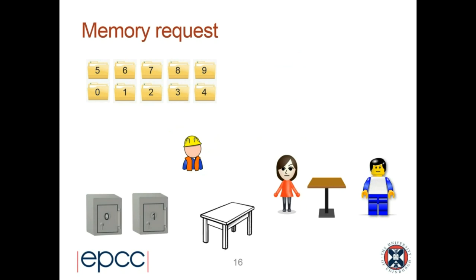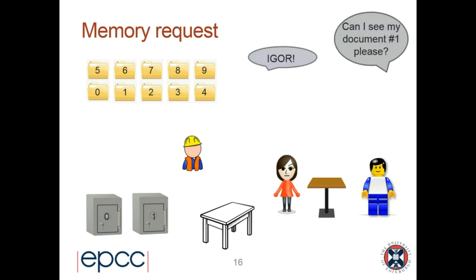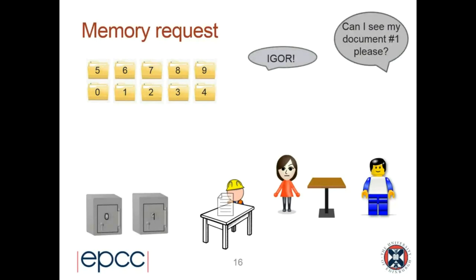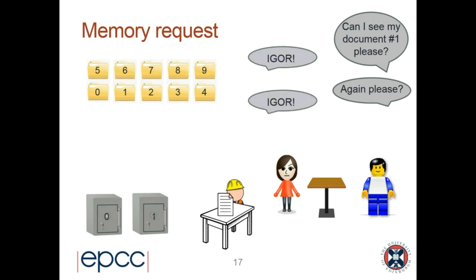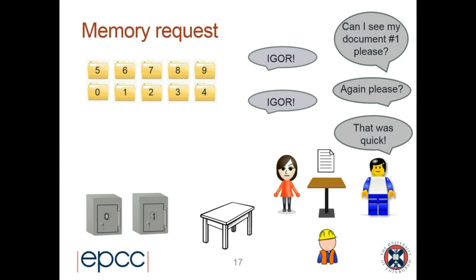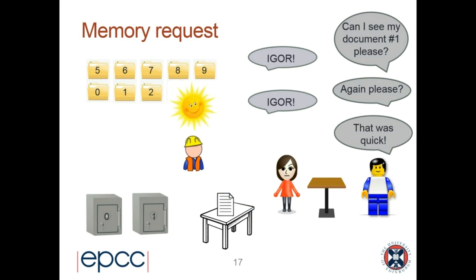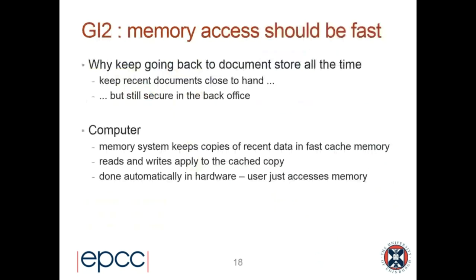Igor has a bright idea — he spends some pocket money and buys himself a table, crucially kept in the back office. Now when he fetches document number one, he stops on the way back and deposits the document on the table. If I ask for it again, Igor can just pick the document off the desk and deliver it quickly. I notice it came back very fast. If there's space for more than one document on the desk, access becomes much quicker — Good Intention Two.